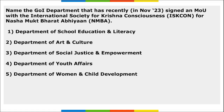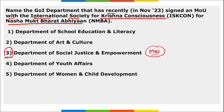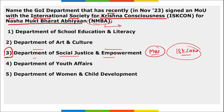Next: which Government of India department recently signed an MOU with the International Society for Krishna Consciousness (ISKCON) for Nasha Mukt Bharat Abhiyan? It is the Department of Social Justice and Empowerment. They signed an MOU with ISKCON for the Nasha Mukt Bharat Abhiyan, which encourages young Indians, students, women, and youth to spread the message that drugs are harmful and should not be consumed.